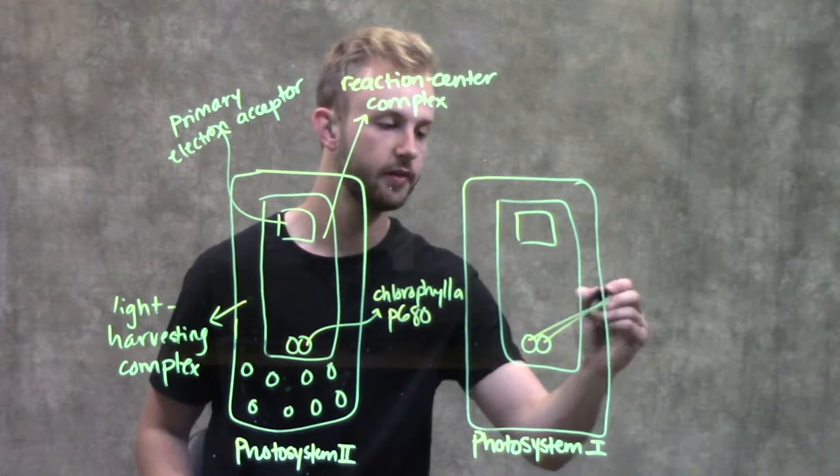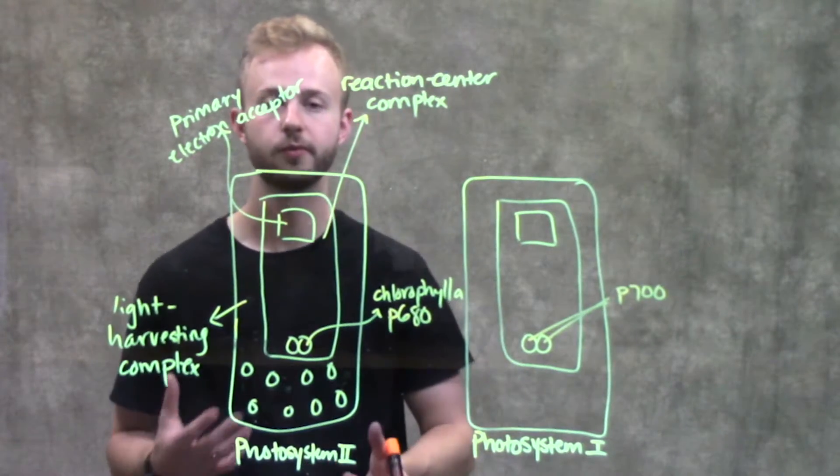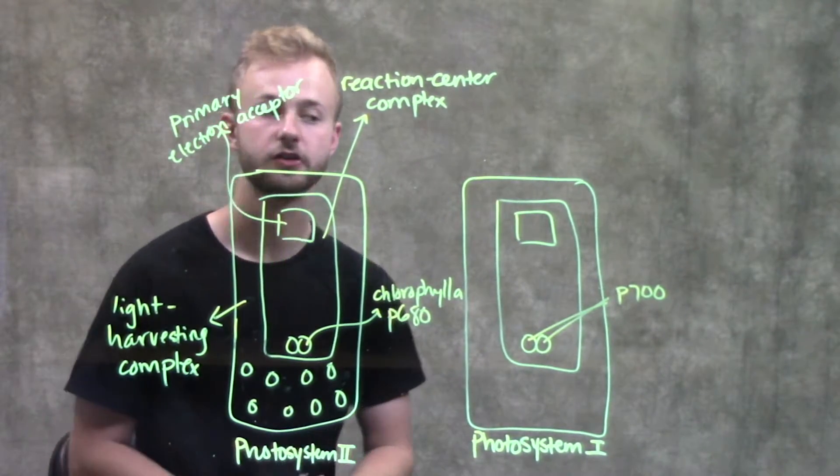Whereas in photosystem one, they're still chlorophyll A molecules, but they're P700. They absorb light at a wavelength of about 700 nanometers.